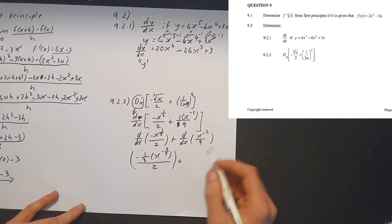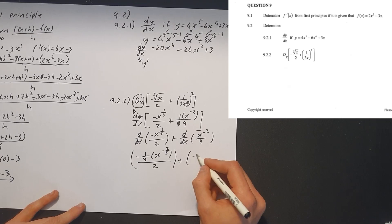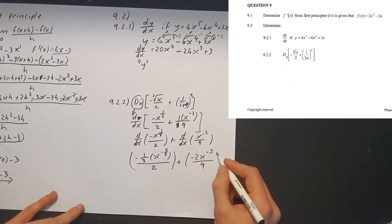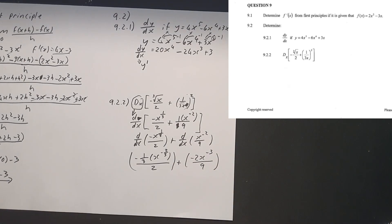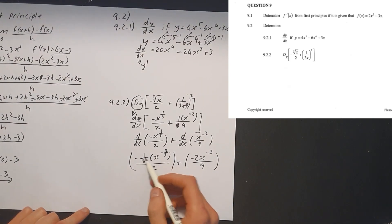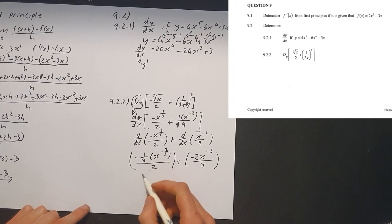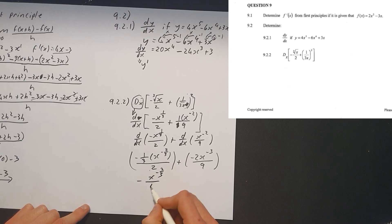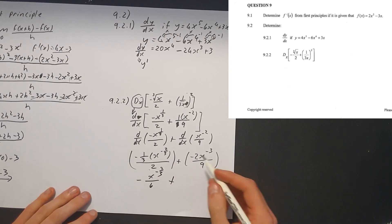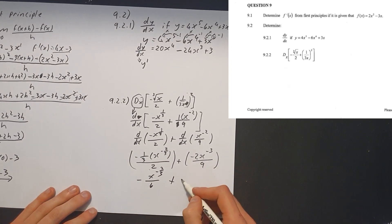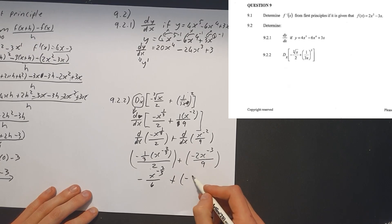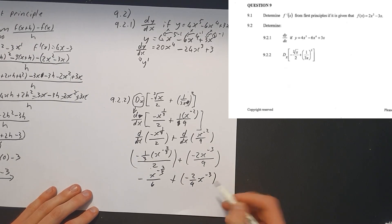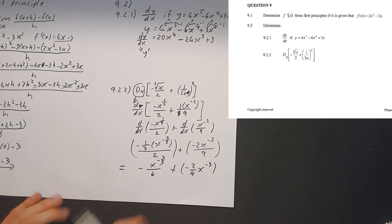Then for the second term: take the exponent negative 2, multiply down, minus 1, giving minus 2 x to the minus 3, all over 9. Simplifying: the 3 in the fraction multiplies with the 2, giving negative x to the negative 2 over 3, all over 6, plus minus 2 over 9 times x to the power of negative 3. You can leave your answer just like that. That's how we go about doing question 9.